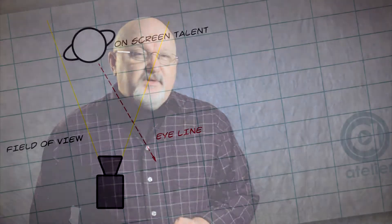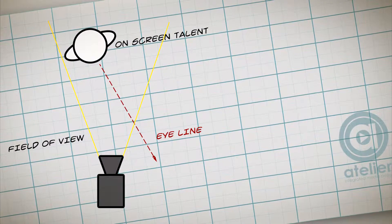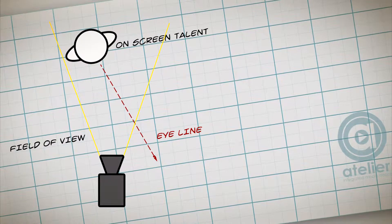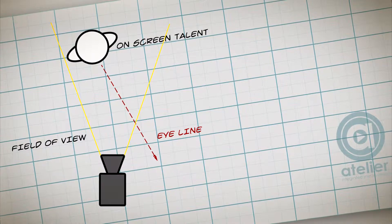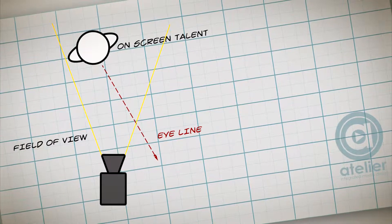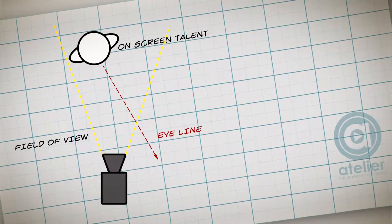A lot of people ask where should my subject look when they're on camera. As a general rule, on-camera talent should never look directly into the lens. I usually set up so that the subject is looking just past the camera towards the wide side of the frame, like this diagram.